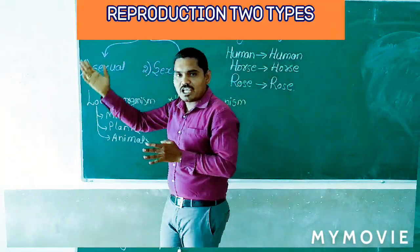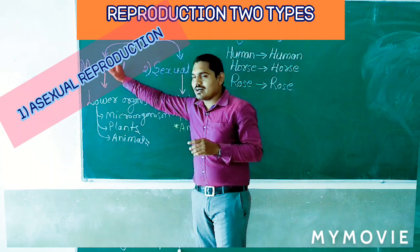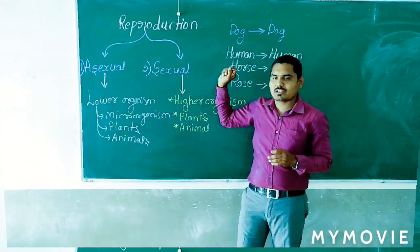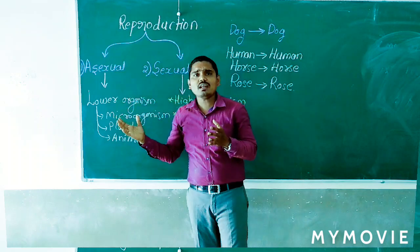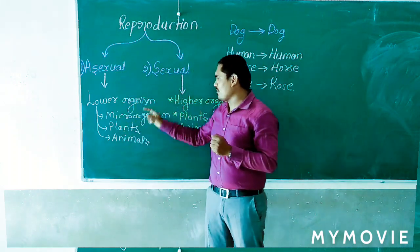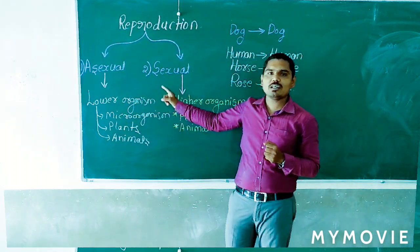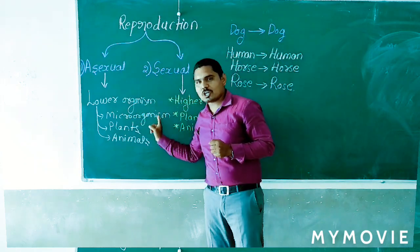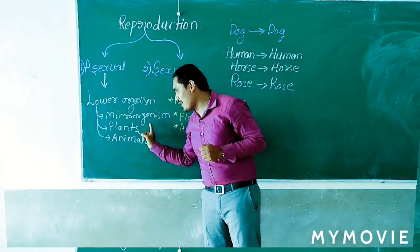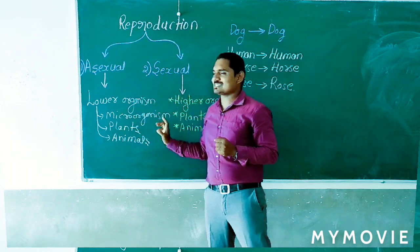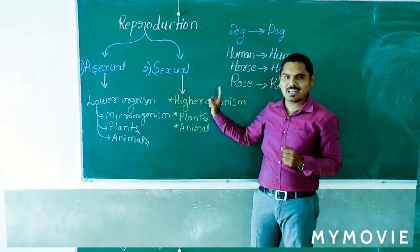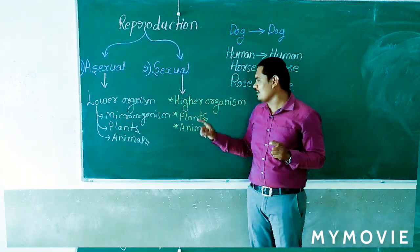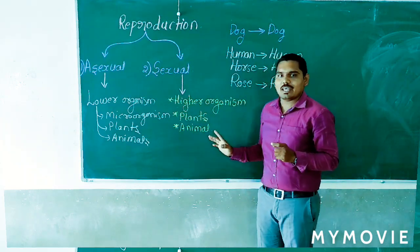In reproduction there are mainly two types: one is asexual reproduction and another one is sexual reproduction. Asexual reproduction occurs in lower organisms — that is, microorganisms and some plants and some animals. Sexual reproduction mainly occurs in higher organisms, meaning plants as well as animals.